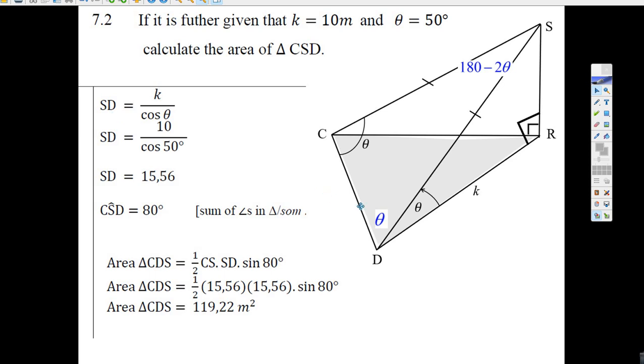Well, the first thing you do is figure out how big SD is. First, let's figure out how long this side is. We need that if we're going to figure out the area and use the area rule. So we put k equals 10 and theta equals 50 degrees into the calculator, and we get 15.56. They give us marks for that.